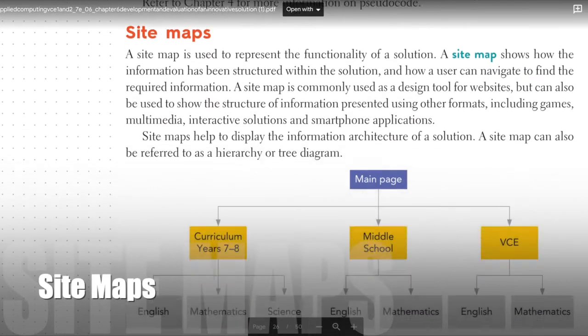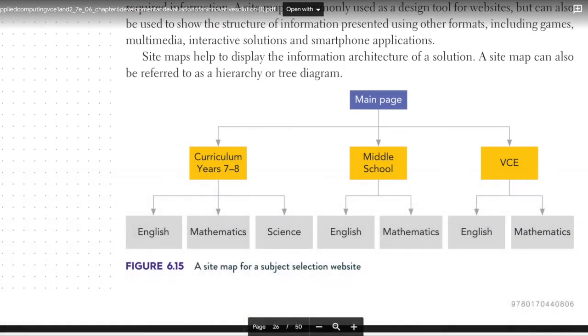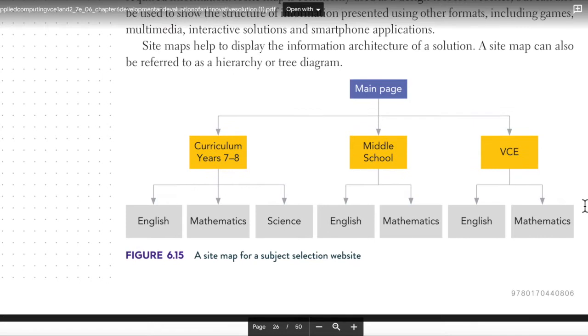If you're doing a website or an app or something like that, you would show where the main page is and what the links are to various other pages and the sub-branches or sub-pages of each of those. Fairly simple thing to do, just so you get a sense of how many pages you need and what pages they are.